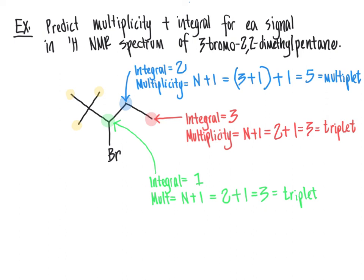Finally, all three methyl groups at the left end show up as a single signal. The integral is determined by the total number of equivalent hydrogens — three plus three plus three equals nine, because there are three methyl groups. For the multiplicity, we pick any one of those protons and count vicinal hydrogens. The only adjacent carbon has no hydrogens directly bonded, so there are zero vicinal hydrogens. N+1 = 0+1 = 1, which is a singlet.